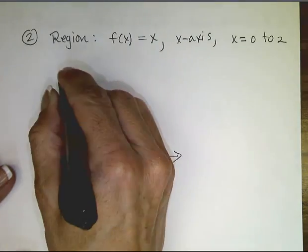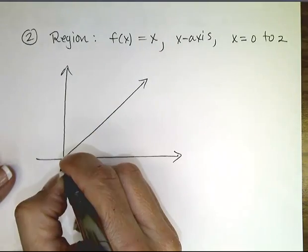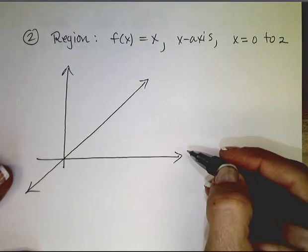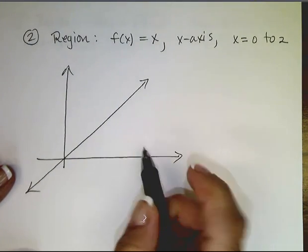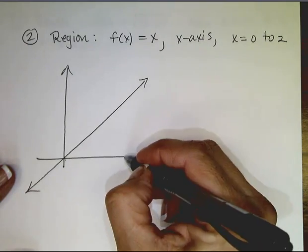Draw our axes. So the line f(x) equals x, we are very familiar with that function. The x-axis I have drawn, x equals 0 to x equals 2.